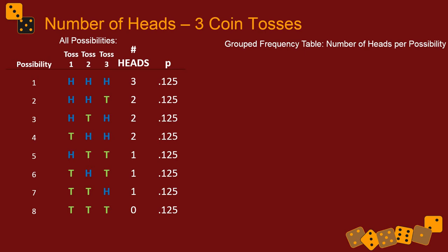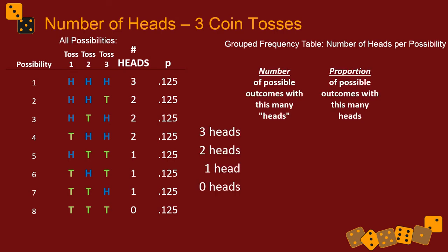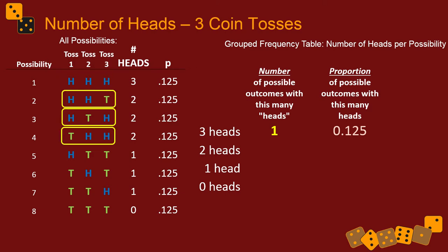Now we're at the distribution step — we group the number of heads together and make a grouped frequency table. Some of these outcomes have zero heads, some have one, some have two, some have three. For three heads, there's only one way that can happen — probability 0.125, one eighth. For two heads, there are three ways it can happen, meaning one tail on three tosses. Adding up three individual one-eighths gives you three eighths, which is 0.375.